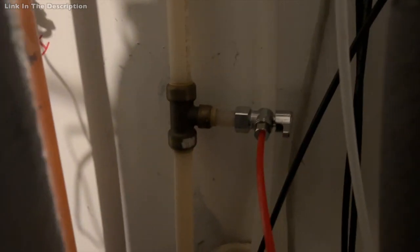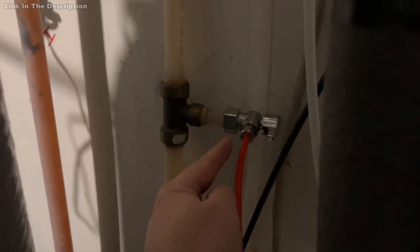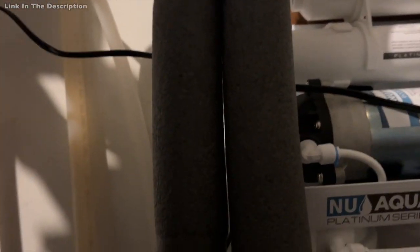This is from where the old one was. We had an old five-stage system, so this is the feed line and this is the clean line coming out of the water softener right here. It's already got the hard water and everything removed, so that's good.